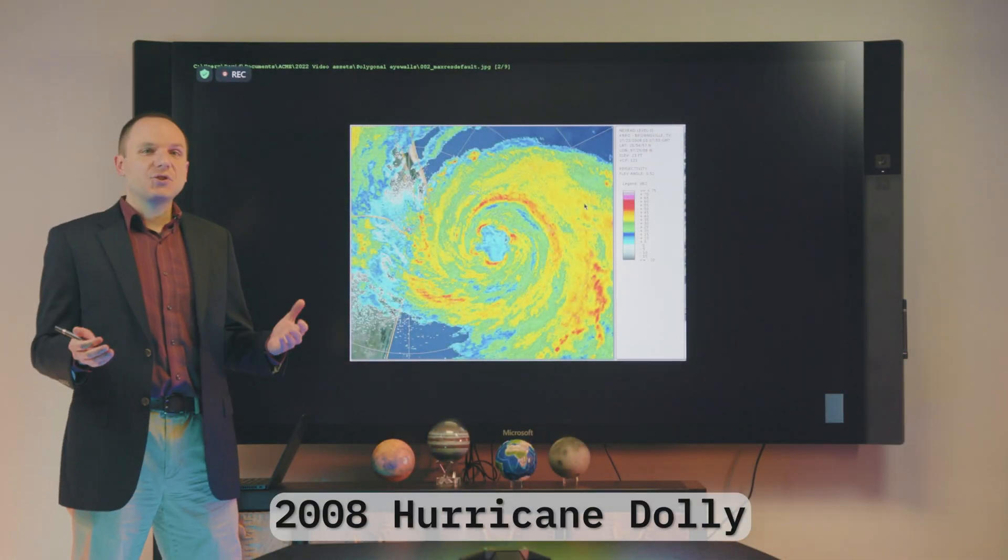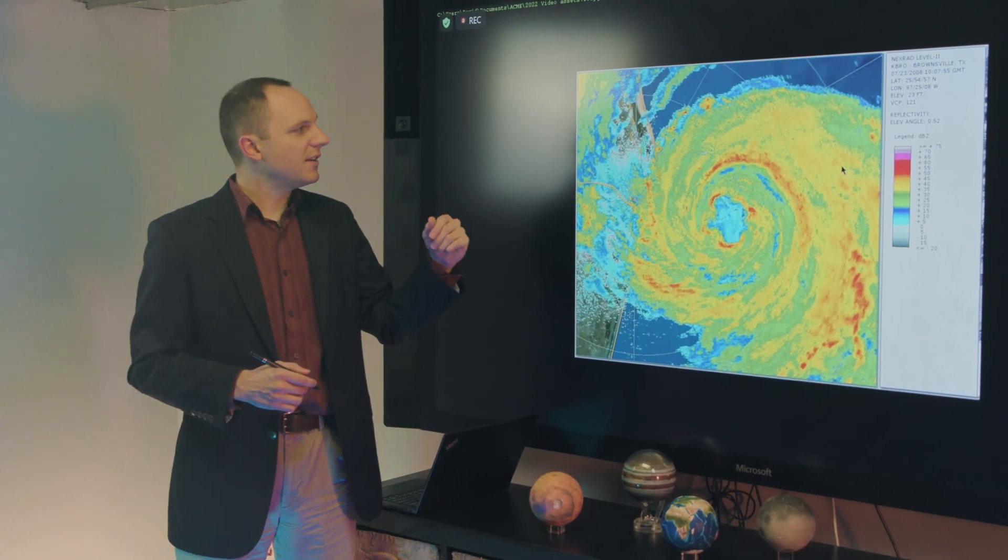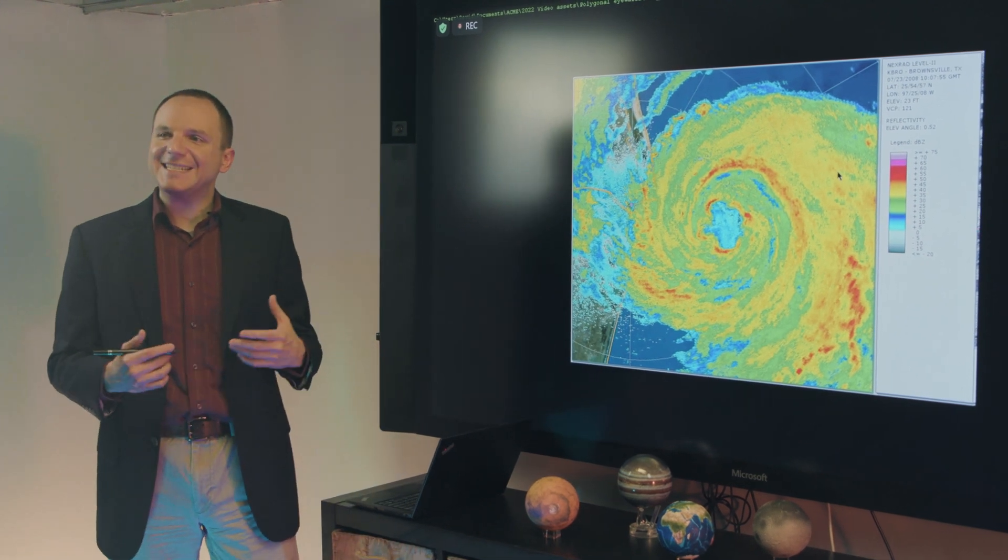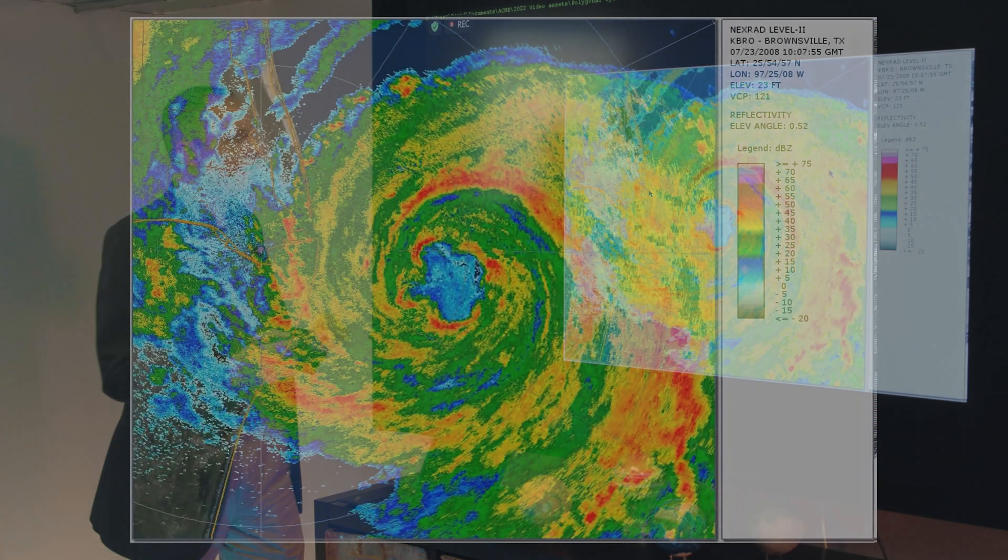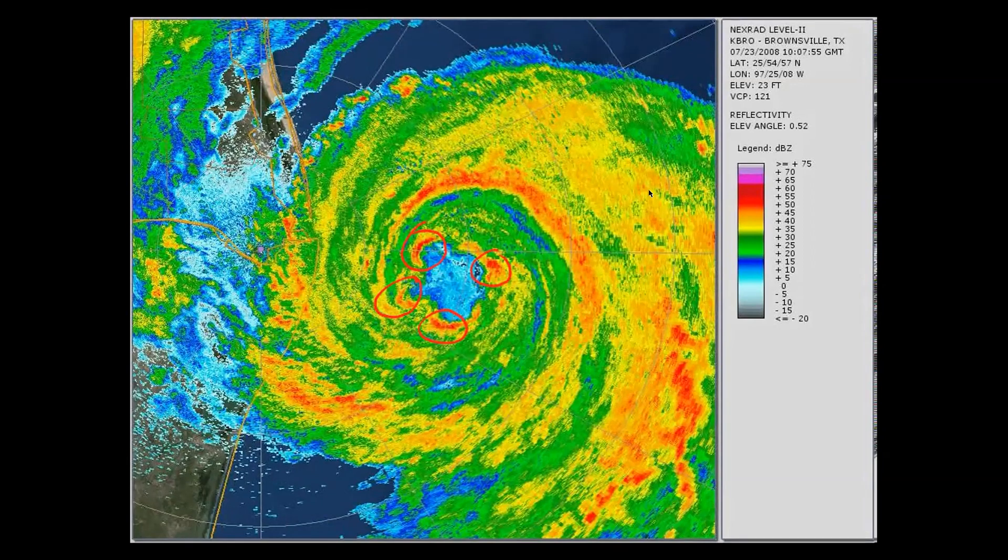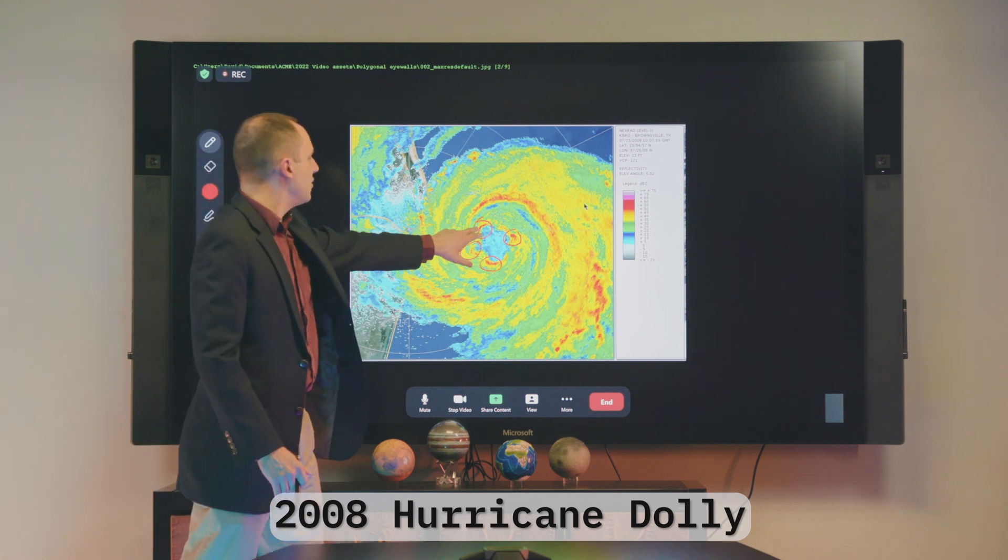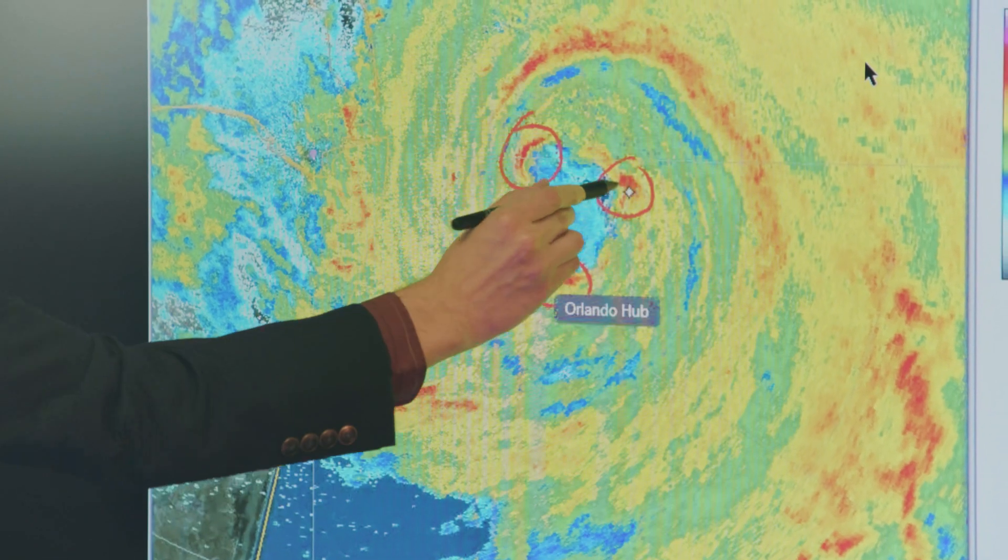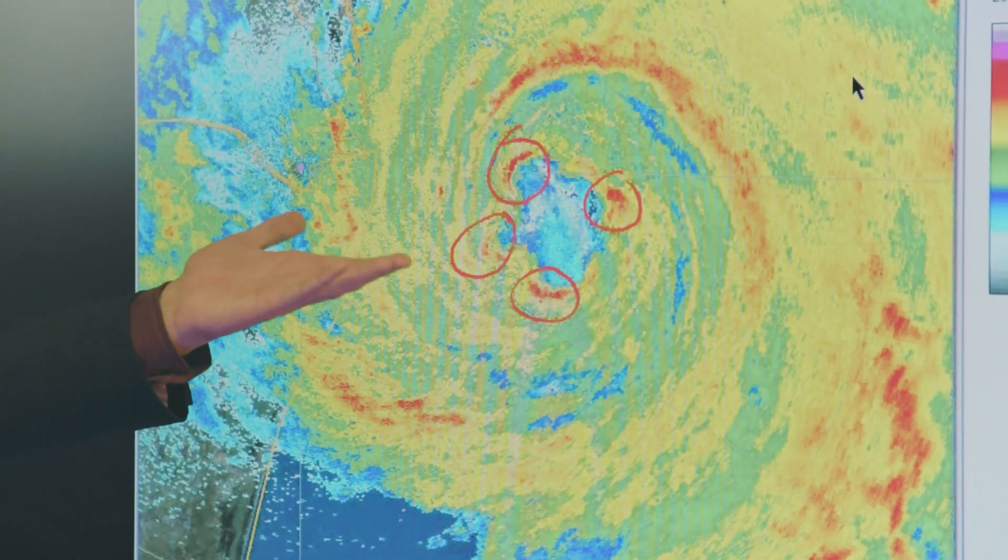So you don't need geostationary satellite imagery. You can actually see this in radar imagery. So what we're taking a look at here is Hurricane Dolly from 2008. And this is imagery from the Brownsville, Texas radar. And if you look really closely, you can see one, two, three, four. So in this particular case, in Hurricane Dolly, we have essentially a square shape with four distinct mesovortices. And now on radar, to see these on radar, you're looking for local maxima right here in radar imagery. And that's how observers use radar energy to see these mesovortices.